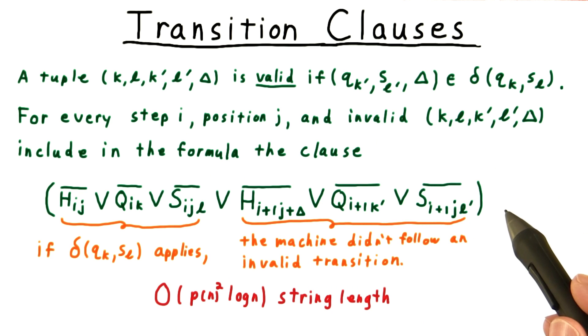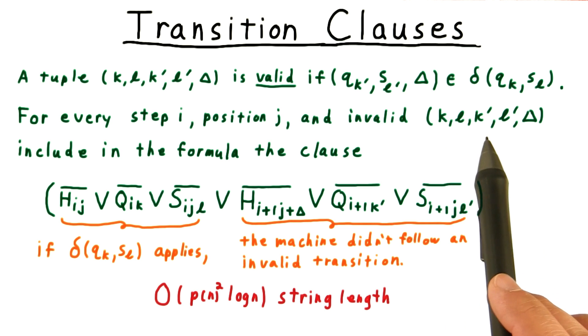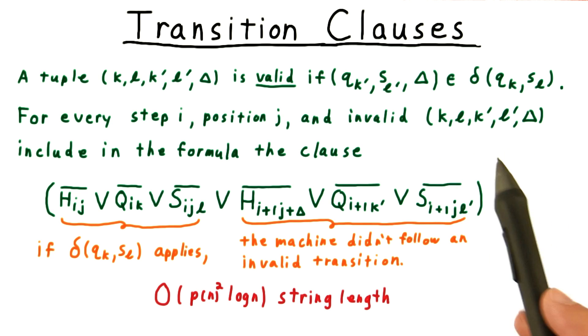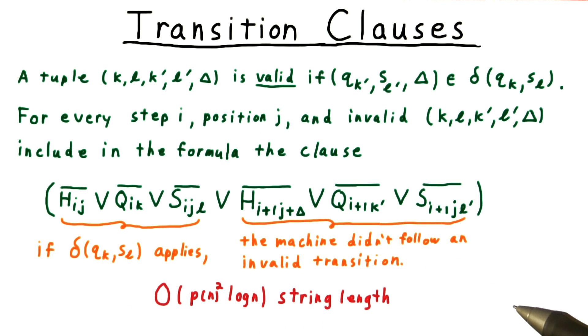The transition clauses might seem like they would require a high order polynomial of symbols. But remember that the size of the non-deterministic Turing machine is a constant in this context. Therefore, the fact that we might have to write out clauses for all pairs of states and tape symbols doesn't affect the asymptotic analysis. Only the range of the indices i and j depend on the size of the input string. So we end up with order p squared log n string length for all of these transition clauses.